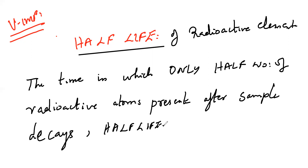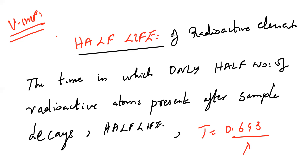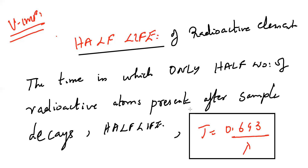A simple formula: the time period T = 0.693 / λ. In board exams, this is where to use this formula. For entrance, direct application by common sense is sufficient.